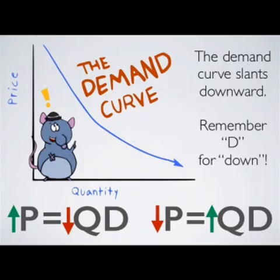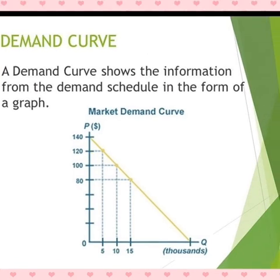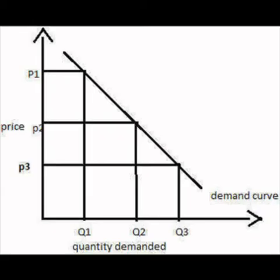Second, how can the demand curve be drawn? First of all, what is a demand curve? A demand curve is a graph of the relationship between the price of a good and the quantity demanded. When the relation between demand and price is shown in a graph, it is known as a demand curve. Each point on the demand curve refers to a different quantity that will be demanded at different prices.